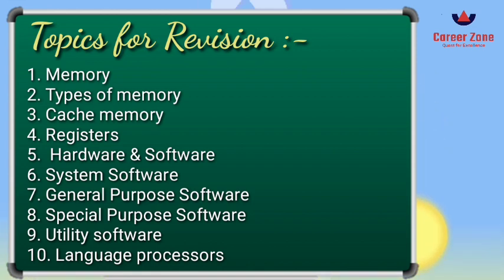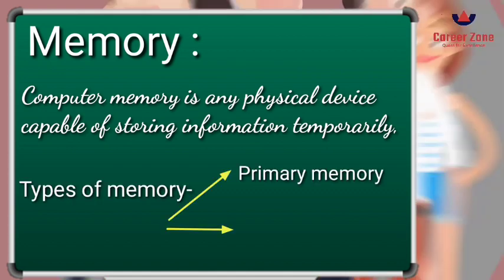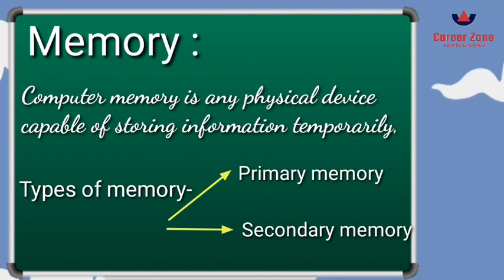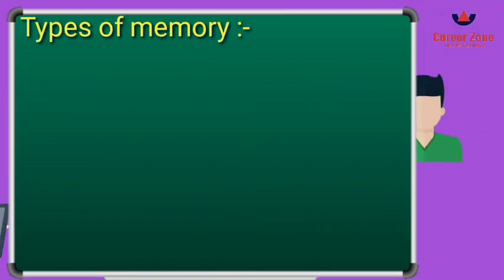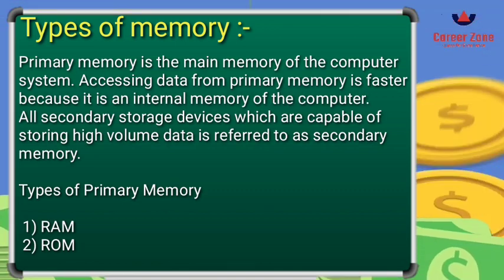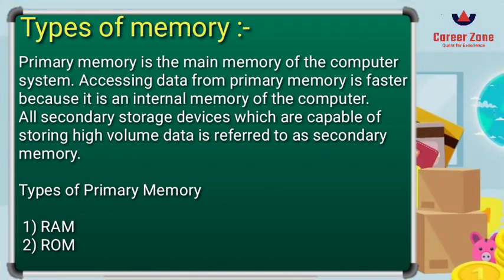So let us first begin with memory. What is memory? Memory is a kind of storage device inside the computer which stores our data temporarily. There are different kinds of memory, which are further divided into primary and secondary memory. Primary memory is also called the main memory of the computer — it is also referred to as internal memory because it is attached internally inside the CPU.